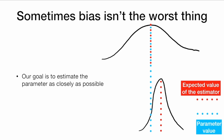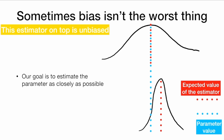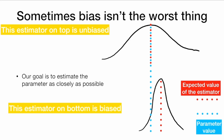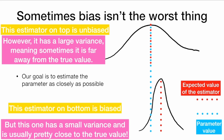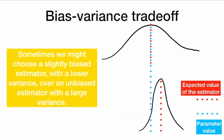Sometimes bias isn't really the worst thing. Our goal is to estimate the parameter as closely as possible. This estimator on top is unbiased — the blue and red line up — but it has a large variance, meaning it's sometimes really far away from the true value with wide tails. This estimator on the bottom is biased, but it has a small variance. Even though on average it's a little off, it doesn't have values that are so far away from the mean like the estimator on top does. So bias is only one thing we care about — we also want a low variance. This is called the bias-variance tradeoff. Sometimes we might choose a slightly biased estimator with a lower variance over an unbiased estimator with a larger variance.